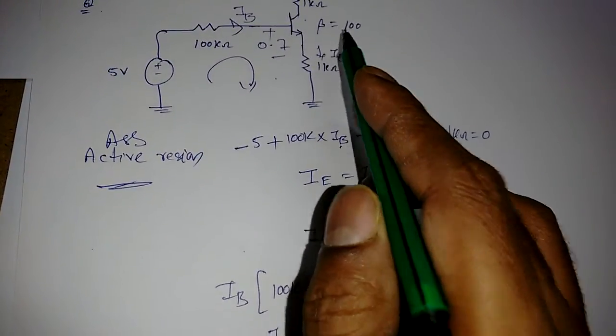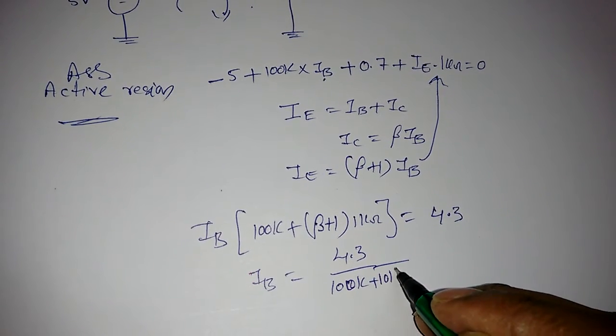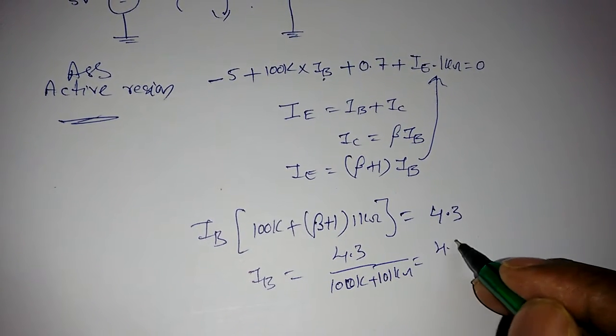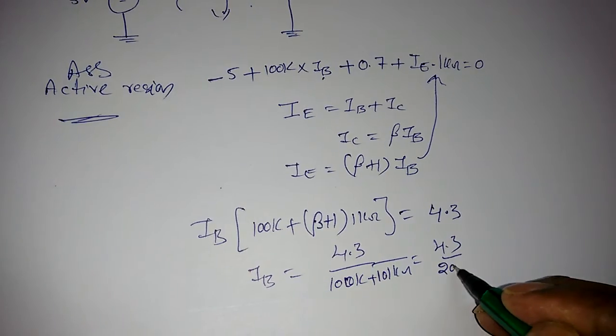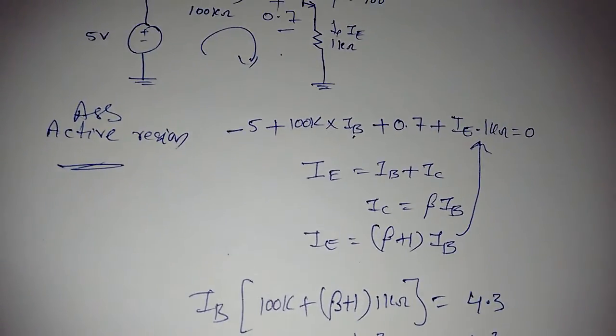Beta is equal to 100, so β + 1 = 101. So 101 × 1kΩ = 101kΩ.